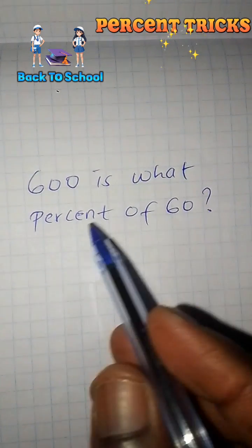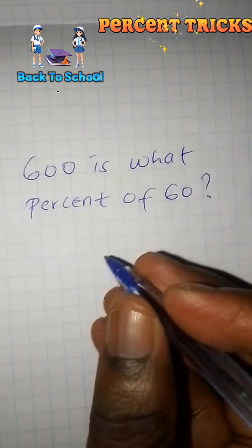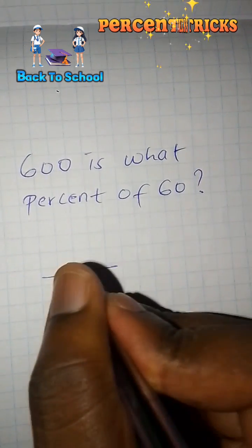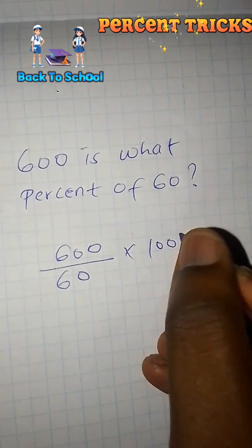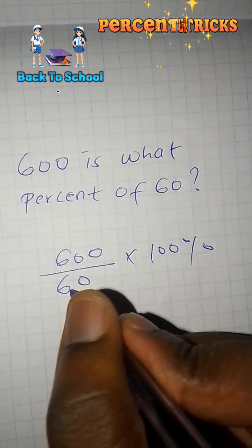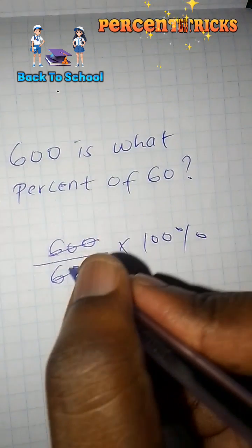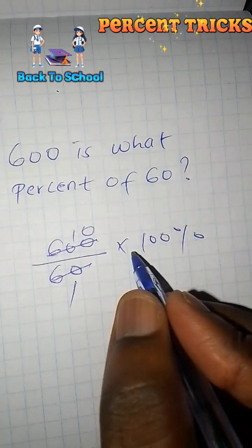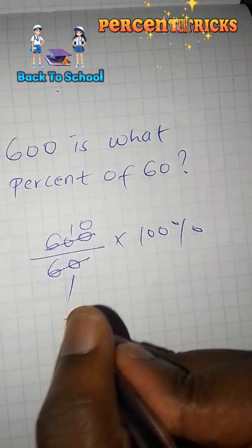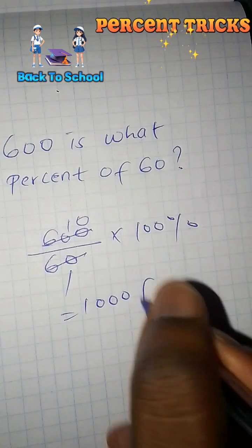600 is what percent of 60? So this 60 we shall write it down. Then 600 we write it up. Then multiply by 100%. So here we shall have 60. Here once 60 goes into 600 we shall have 10 times. So that 10 times 100 is 1000%.